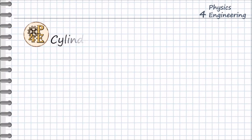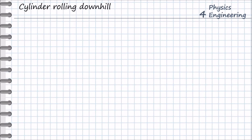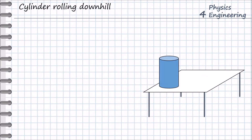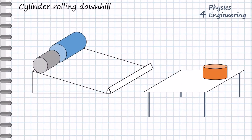Hey, this is Physics for Engineering, and today our topic is cylinder rolling downhill. Imagine we have different types of cylinders with different geometry, different mass, different density, and different properties. We have a hill, and we take two various cylinders with different length, different diameter, different mass, and let the cylinders run at the same point of time. Our task for today is to understand which cylinder will arrive first at the finish line.